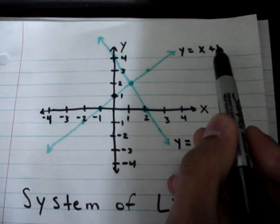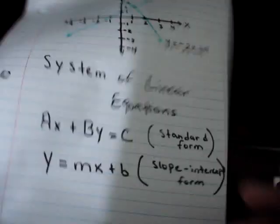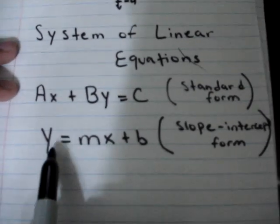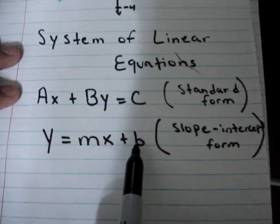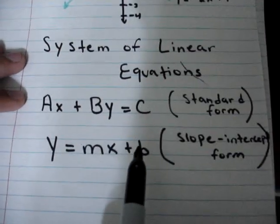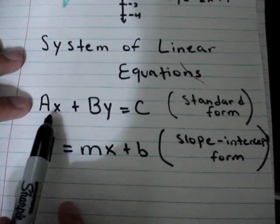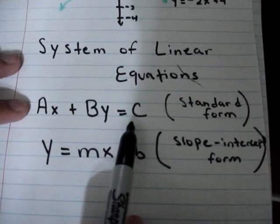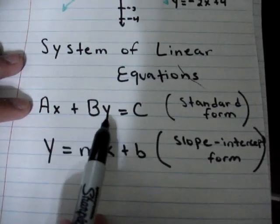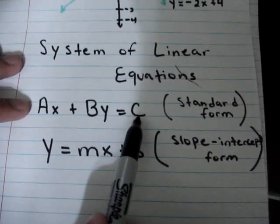Now, these equations are in the form of slope-intercept, and the slope-intercept form is written as y is equal to mx plus b. However, when you're using the elimination method, you want to change this into the standard form of a line. The standard form of a line is written as ax plus by is equal to c, where a, b, and c are rational numbers.